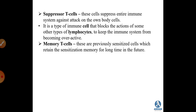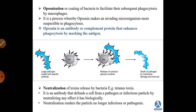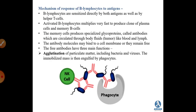Memory T cells keep the memory of the first encounter with the antigen, so any second encounter produces a quicker and stronger response. The B lymphocyte mechanism is similar — B lymphocytes also produce clones of plasma cells and memory cells. Memory cells produce specialized glycoproteins called antibodies, which circulate in body fluids like blood and lymph. Free antibodies perform three main functions: agglutination, opsonization, and neutralization.